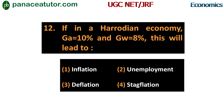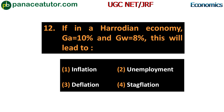Next question: if in a Harrodian economy GA equals 10% and GW equals 8%, this will lead to - first, inflation; second, unemployment; third, deflation; fourth, stagflation. This question asks what happens when actual growth rate is greater than warranted growth rate. If the actual growth rate exceeds the warranted growth rate, inflation will prevail in the economy. So the correct answer is option one - inflation.